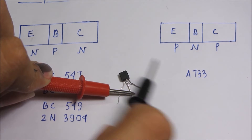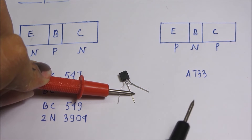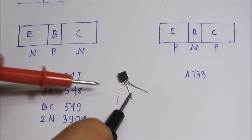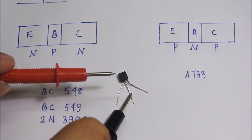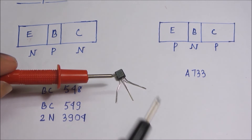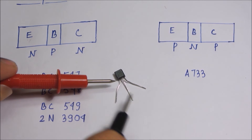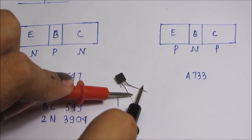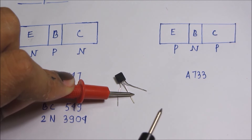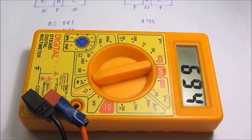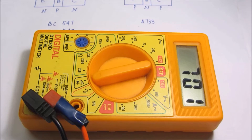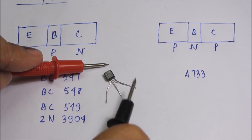So what have we learned from this? When we touched the black terminal to the middle and the red terminal to either the right-most or left-most terminal, only a value of one was seen — meaning no conduction. But as soon as we moved the black terminal to the right-most or left-most terminal and kept the red probe on the middle one, some value was obtained both times. This tells us that the transistor is an NPN transistor.